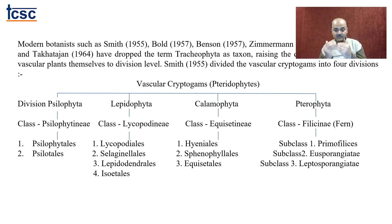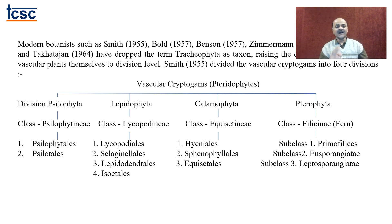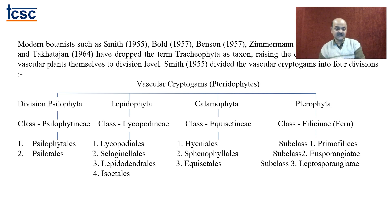In Calamophyta under class Equisetinae we have Hyeniales, Sphenophyllales, and Equisetales. In TY we study the life cycle of Equisetum — the horsetail fern — which is included under Calamophyta. In Pterophyta under Filicinae there are subclasses: Eusporangiate and Leptosporangiate. Eusporangiate means the sporangium develops from one single cell, while Leptosporangiate — leptos meaning a group of cells — means the sporangium develops from a group of cells.